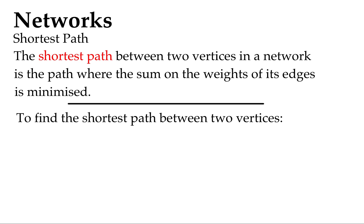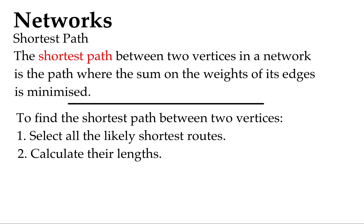To find the shortest path between two vertices, I haven't got anything fancy for you here, it's the basic stuff. Select all the likely shortest routes, and we'll talk about what makes a route likely. Then we're going to calculate their lengths, add it up, old school. And we're going to compare them and identify the shortest. It's amazing but sometimes the basic stuff works.